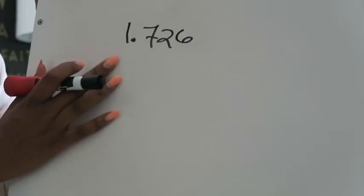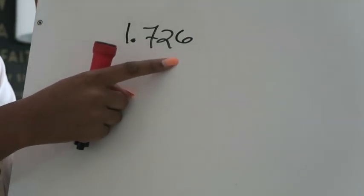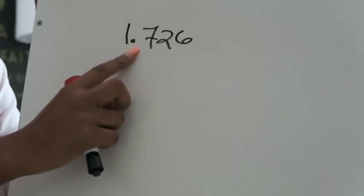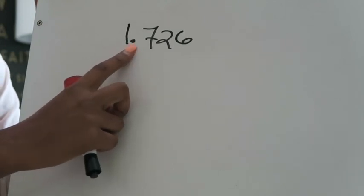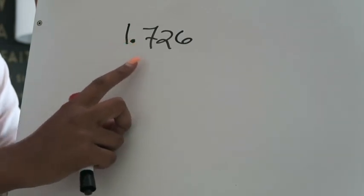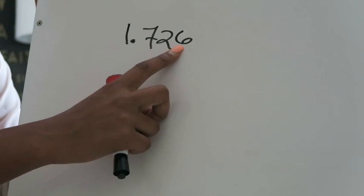Here we have the decimal 1 and 726 thousandths. One thing I really want to focus on is getting away from saying things like "1.726" because that's not the proper way to read it. The trick to reading a decimal correctly is understanding that when you see a decimal point, it translates to the word "and." So you would read this as "1 and..."